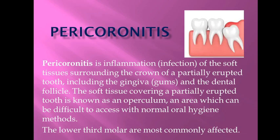Pericoronitis is an inflammation or infection of the soft tissue surrounding the crown of a partially erupted tooth. As you can see in this diagram, this is the soft tissue surrounding the crown of a partially erupted tooth, including the gingiva or gums and the dental follicle. The soft tissue covering a partially erupted tooth is called the operculum. The operculum is an area which can be difficult to access with normal oral hygiene methods — it's difficult to clean or brush. Pericoronitis mostly affects the lower third molar.